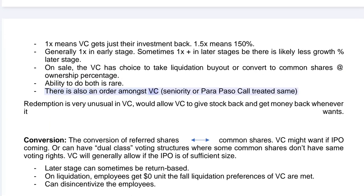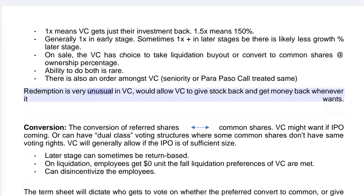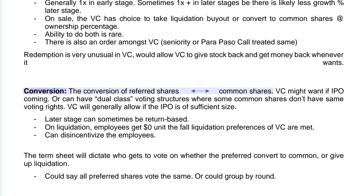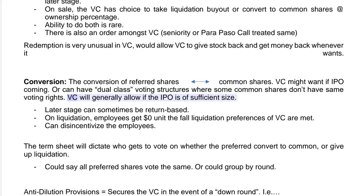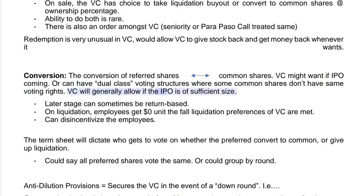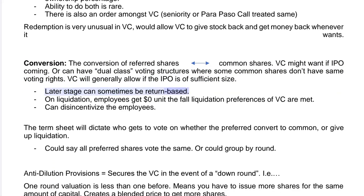There is also an order of seniority among VCs, or a pari passu arrangement where all are treated the same. Redemption is very unusual in VC — it would allow the VC to return their stock and get their money back at will. Conversion refers to converting preferred shares to common shares, which a VC might want if an IPO is coming. There can also be dual class voting structures where some common shares don't carry the same voting rights; VCs will generally allow conversion if the IPO is of sufficient size.